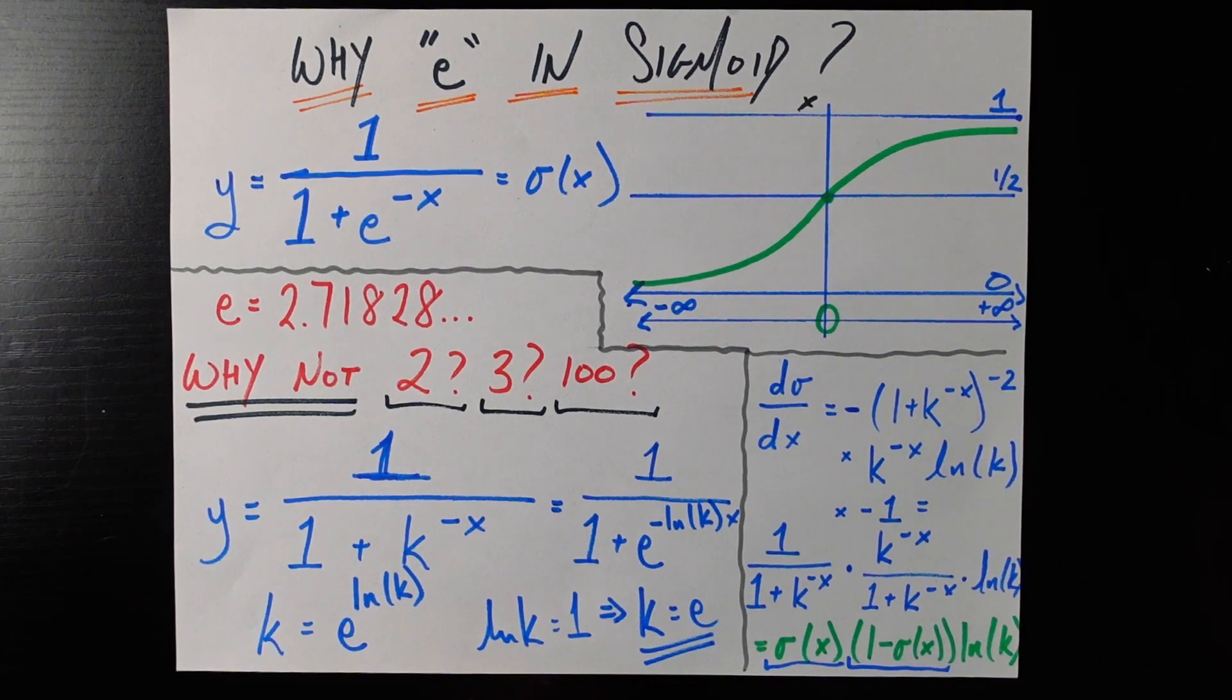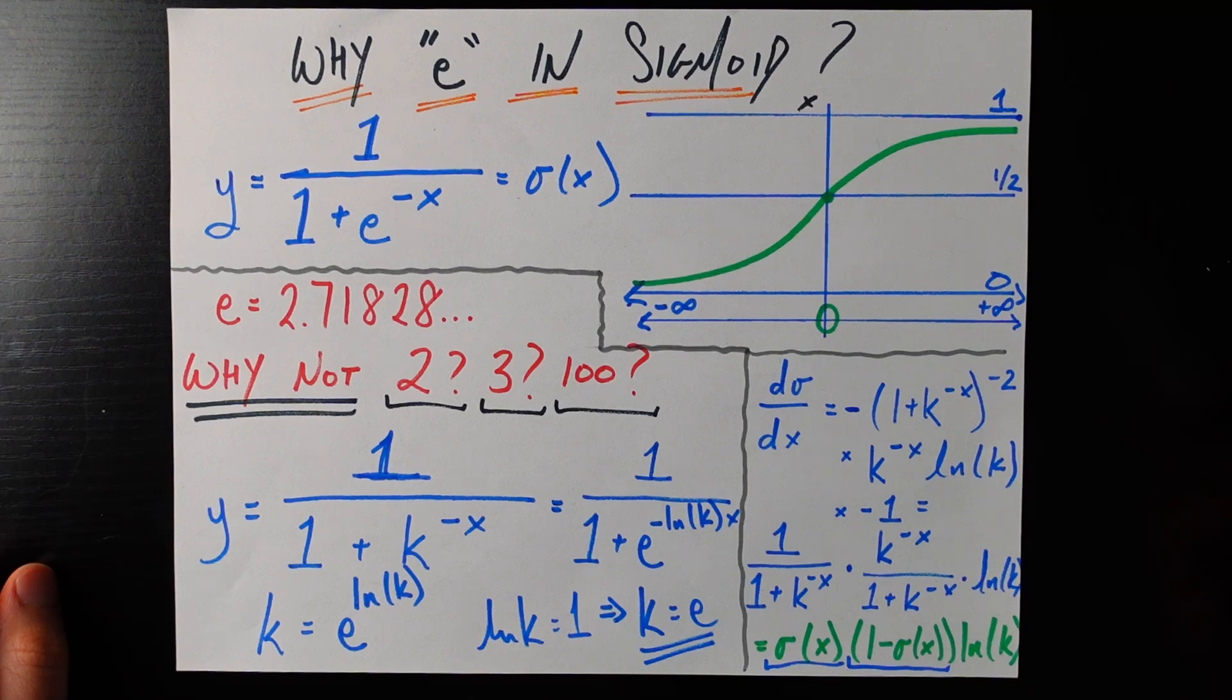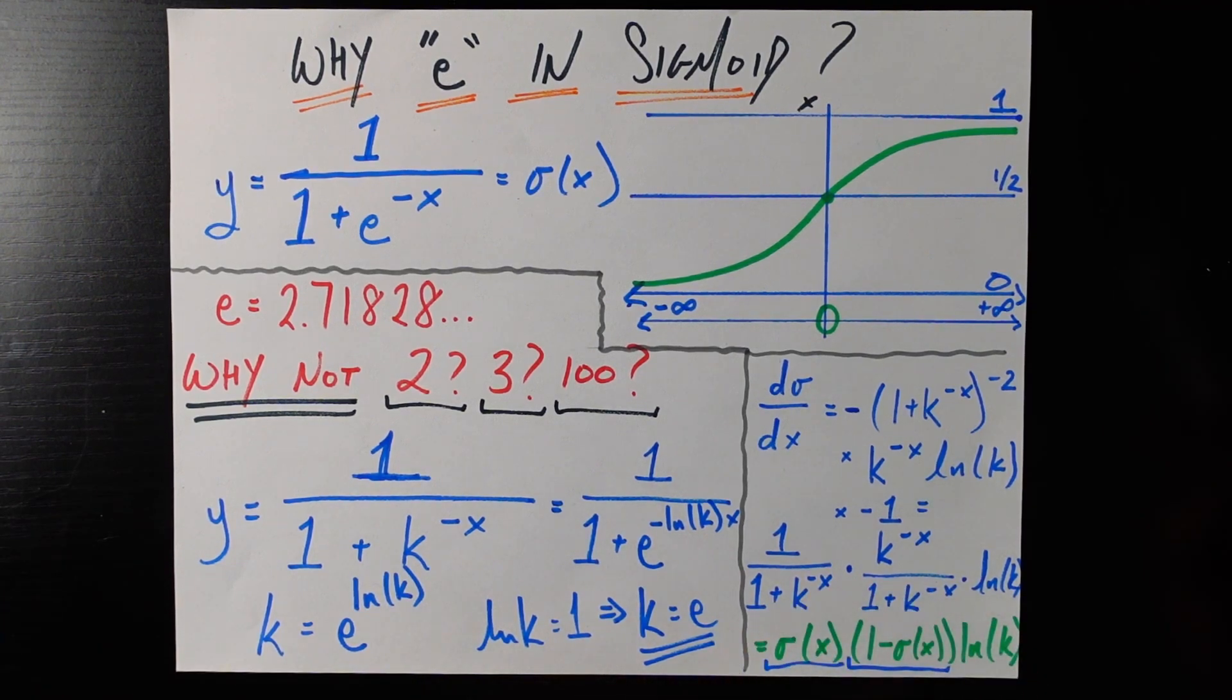So in a nutshell why do we use e as the base here? Well you don't have to you can use any number bigger than 1 and everything you know about data science and machine learning is going to remain the same. Your notation just gets a little bit more annoying and we don't lose anything by using e. In fact we gain a simpler form of this derivative.